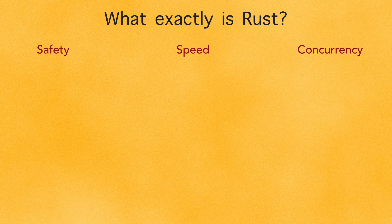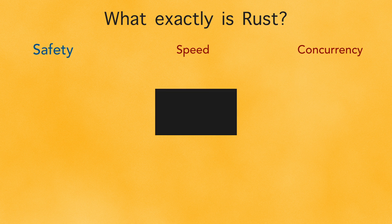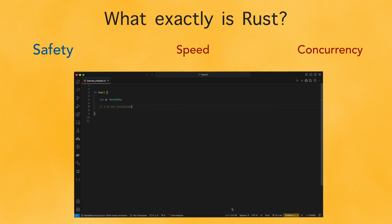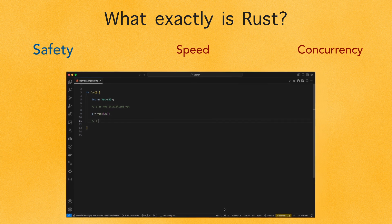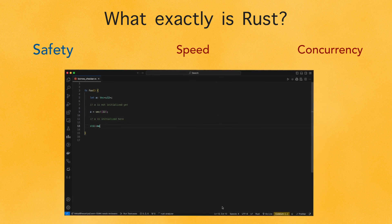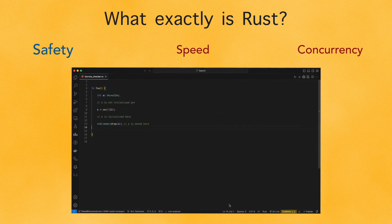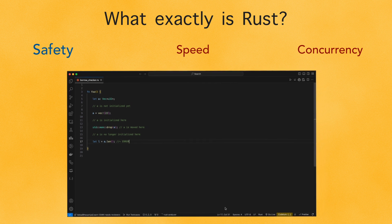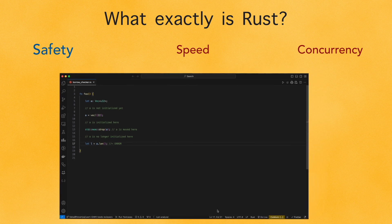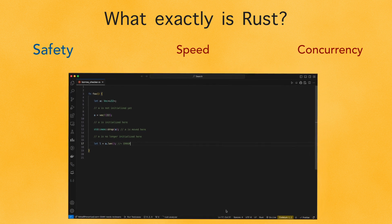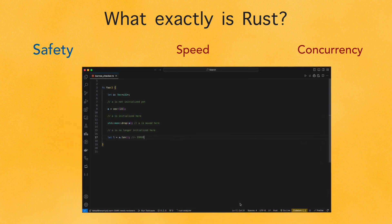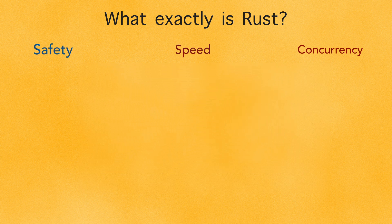Let's break that down. First up, safety. Rust was designed with safety in mind. It has a unique feature called the Borrow Checker that ensures memory safety without needing a garbage collector. It means fewer bugs, fewer crashes, and more confidence in your code.